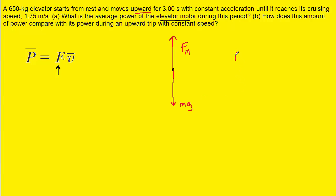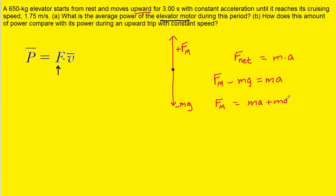According to Newton's second law, the net force acting on the elevator equals its mass times its acceleration. From the free body diagram, taking upward as positive, we have fm minus mg equals ma. Solving for fm, we add mg to the right-hand side.